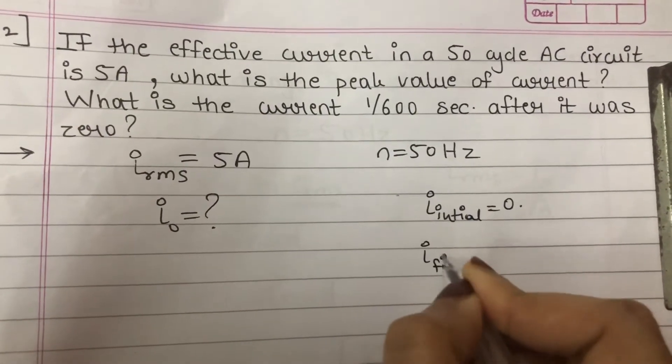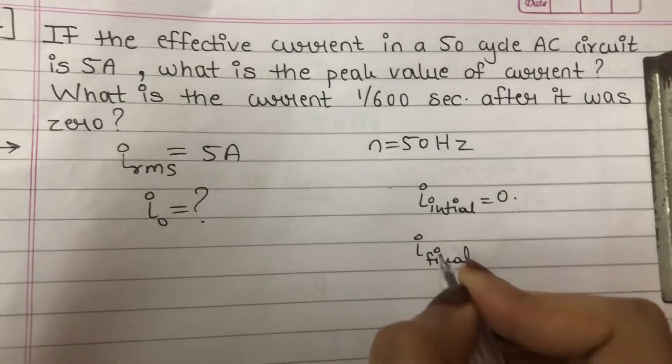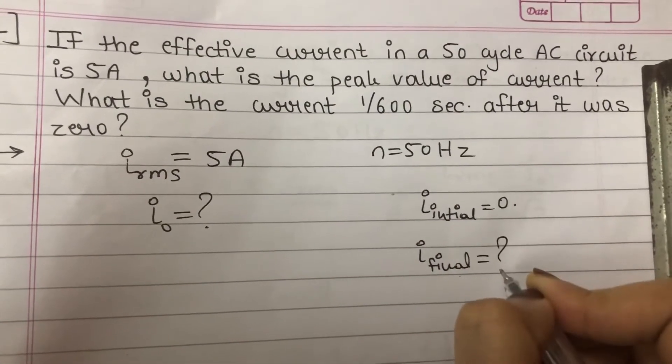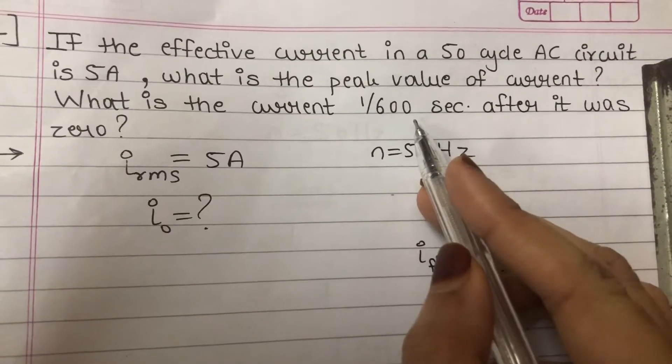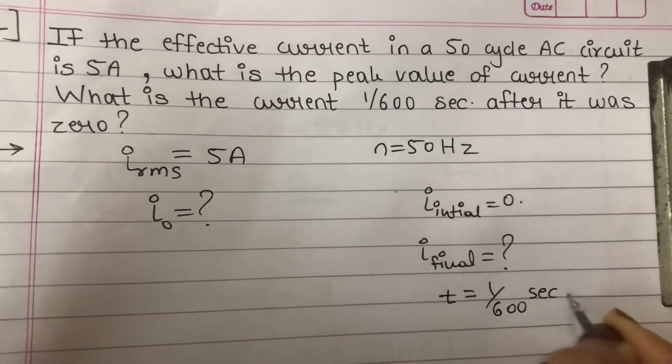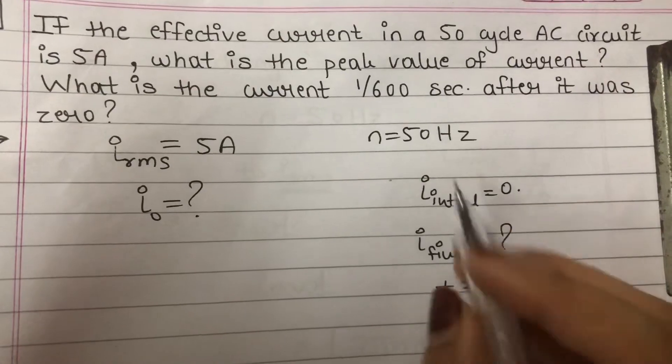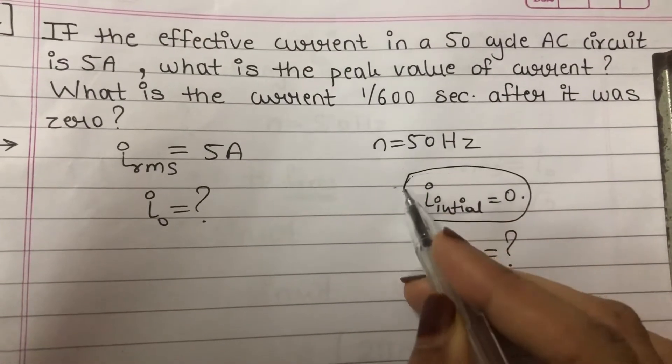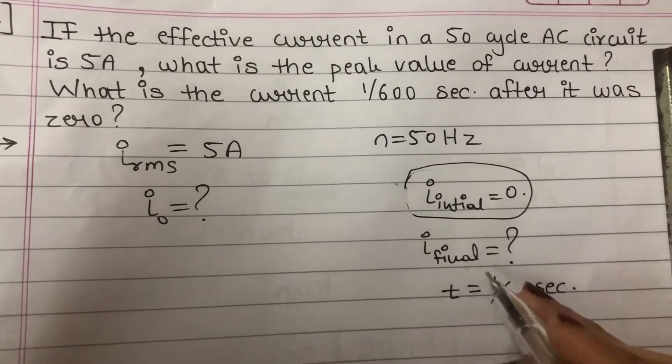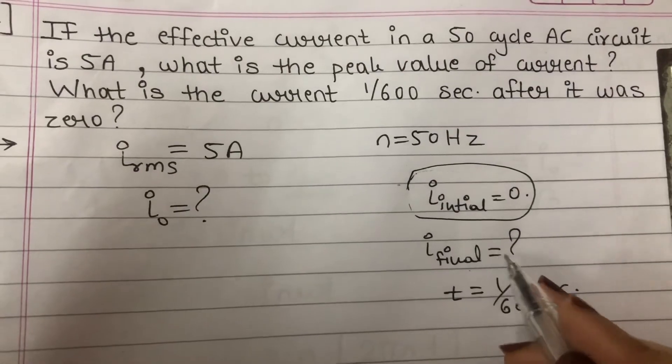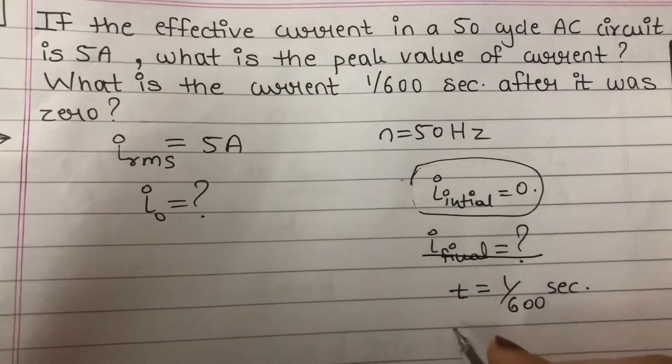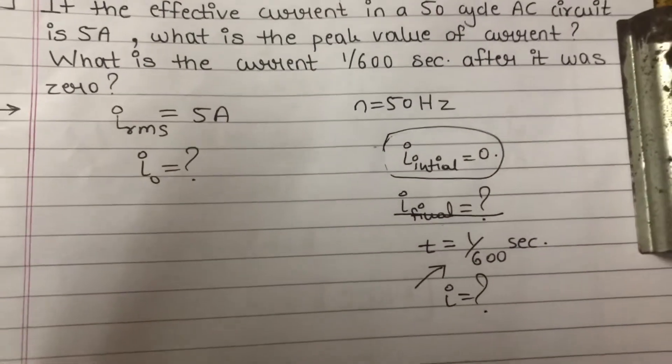But what about final, at final condition, what will be the value of the current? And the time is given to us. Time is 1 upon 600 seconds. Initially the current was 0. At this time, that is 1 upon 600 seconds, what is the value of my current? That we need to find out.